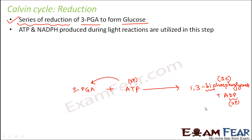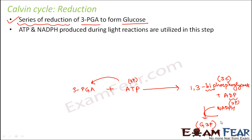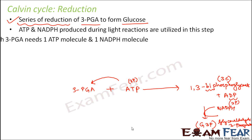This intermediate compound will further utilize NADPH. NADPH will get further utilized and this intermediate compound will extract the high energy electrons of NADPH, and it will form another compound called G3P. And what is G3P? It is glyceraldehyde-3-phosphate. So this is the next stable compound which is formed in Calvin's cycle.